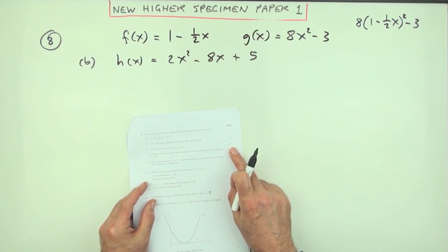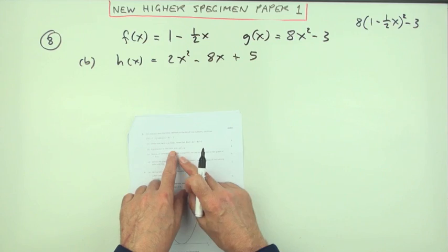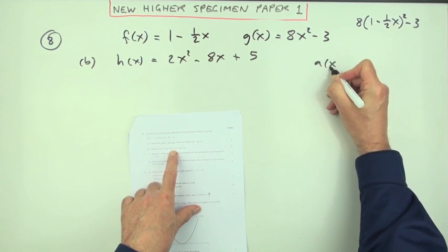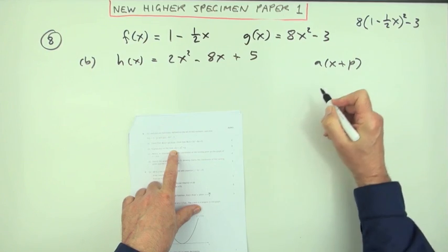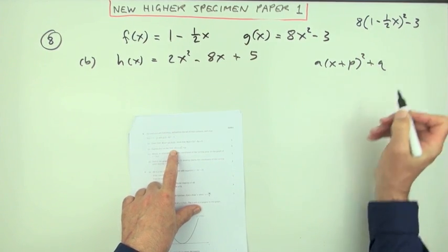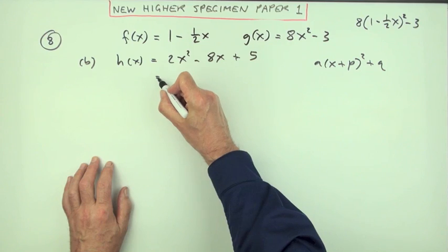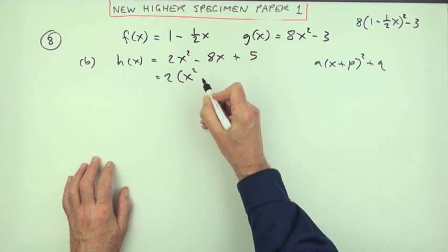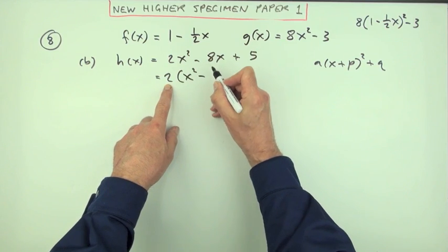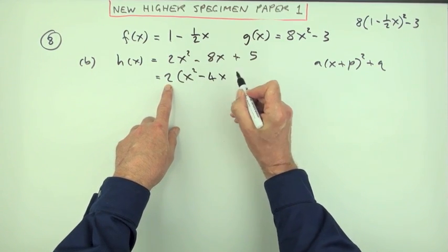Now part b for another three marks: express it in the form of a completed square. Well, it's just x in the bracket, so take that 2 out. So it'll be 2 lots of x². Taking this out as a factor will luckily leave that as a nice even number, 4.